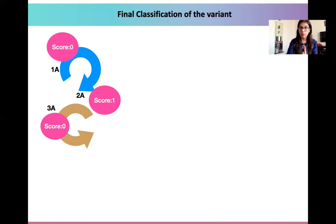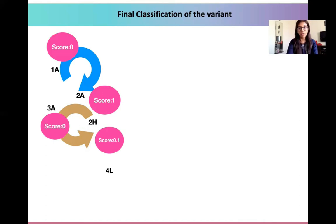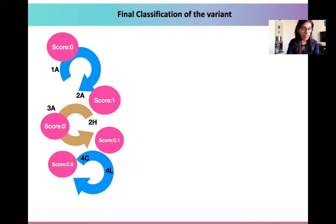Moving to section 2H, there were certain predictors of haploinsufficiency because of one predicted gene. There was also case-control data in the 4L section. The ClinGen resource group has made modifications for X-linked genes, combining the 2H and 4L scores to give a score of 0.1. Moving to section 4C, there were individual case evidences with more than 10 cases. The guidelines assign 0.1 points for each, giving a total score of 0.9 for this section.